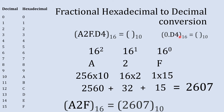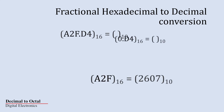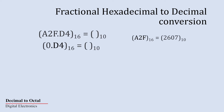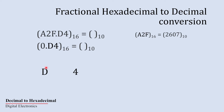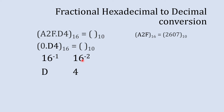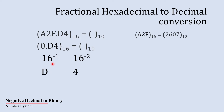Now it is time for the fractional number part. We write the fractional digits D and 4. For the fractional part, we start with the leftmost digit and multiply by 16 raised to minus 1, then 16 raised to minus 2. Remember: for the fractional part, you multiply by 16 raised to minus 1, minus 2, minus 3, minus 4, and so on.